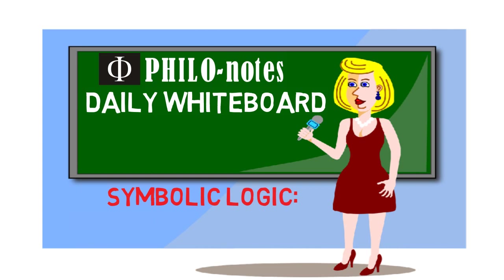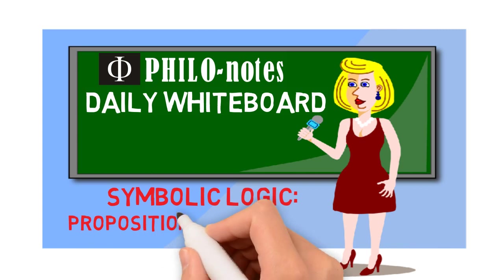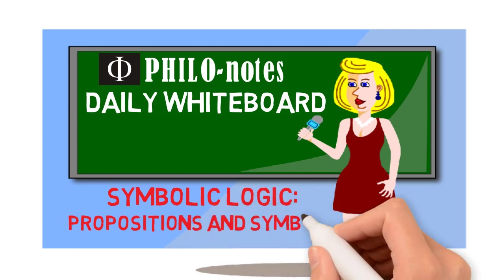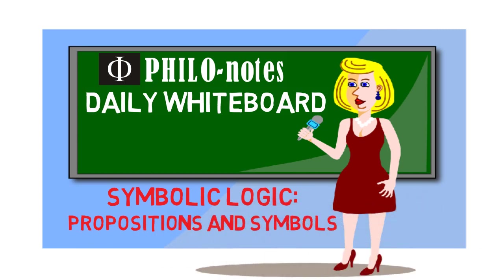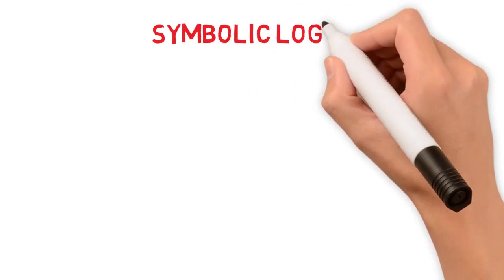Alright, without further ado, let's get started with our first section. This is all about the propositions and symbols used in symbolic logic. Just as in traditional or Aristotelian logic, our main goal in symbolic logic is to determine the validity of arguments.